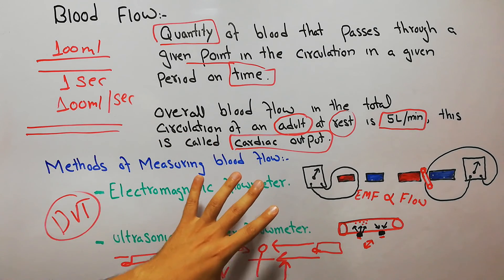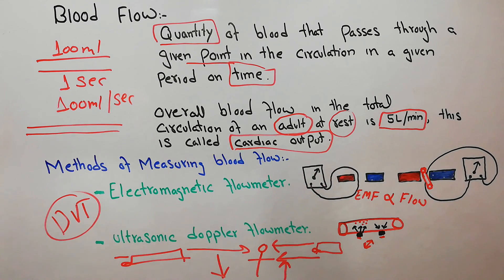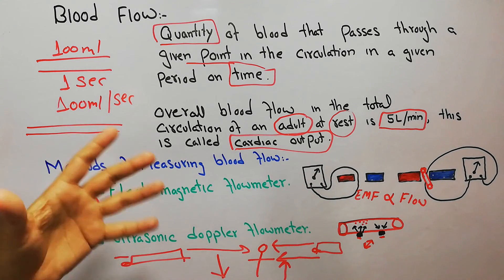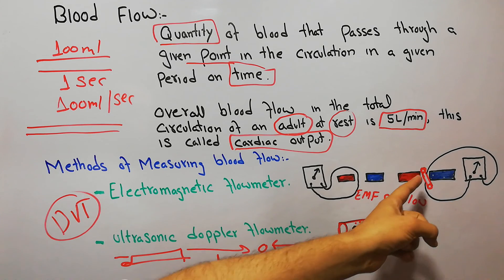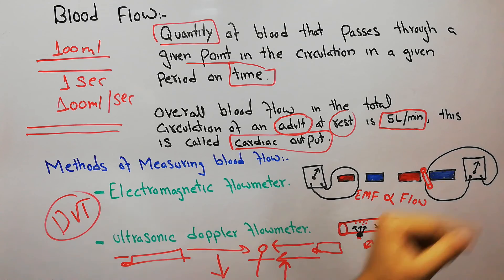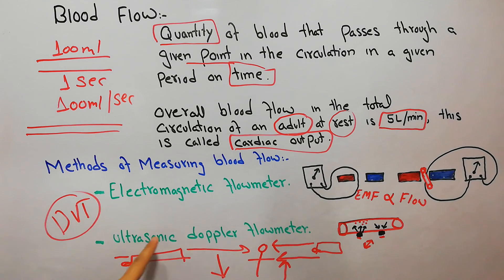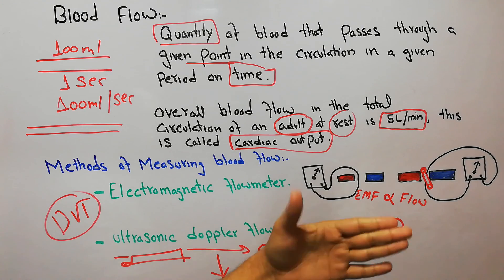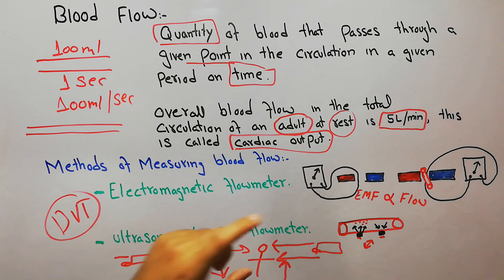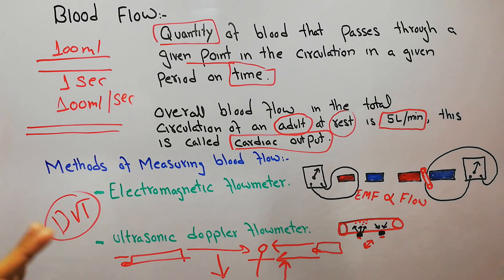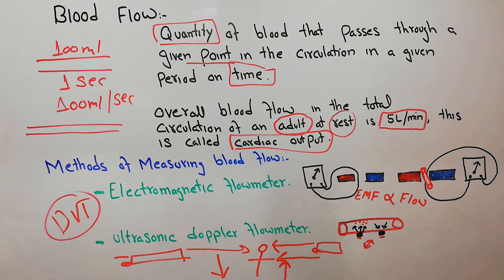There are two methods to calculate blood flow. The first is the electromagnetic flow meter, which uses the mechanism of a generator — the vessel is placed between two poles of a magnet, generating electromotive force that is recorded with a meter. The second method is the ultrasonic Doppler flow meter, which uses the Doppler effect: ultrasonic waves are sent towards the blood vessel, strike the red blood cells, come back to a receiver, and the difference in speed between the two waves helps calculate blood flow.